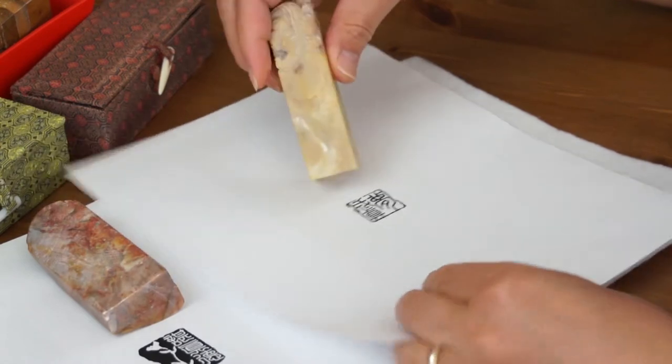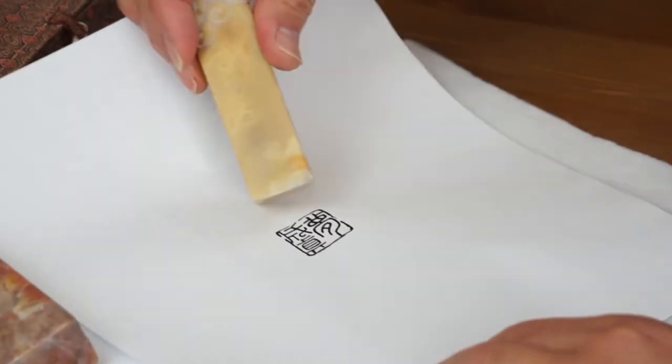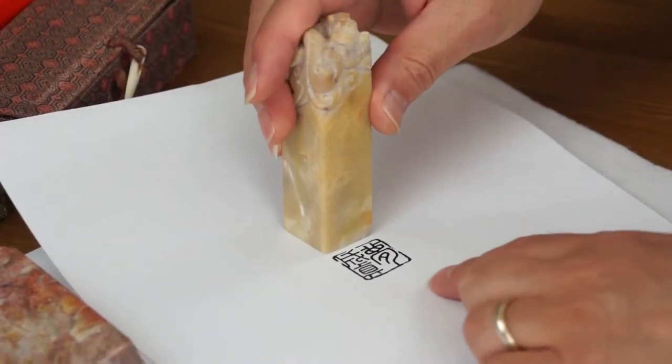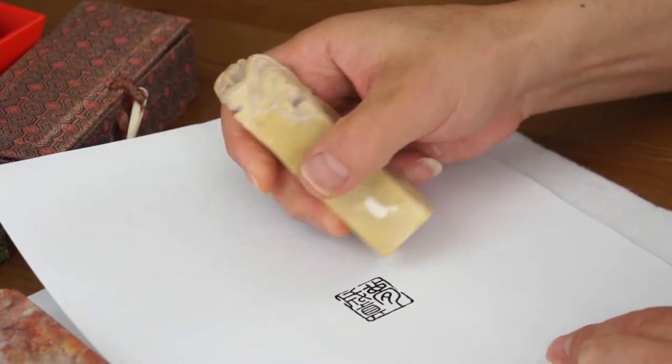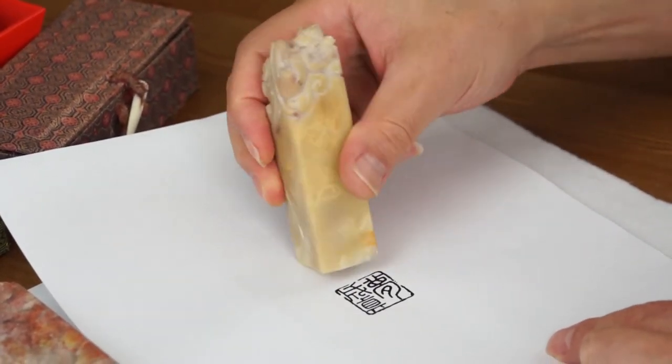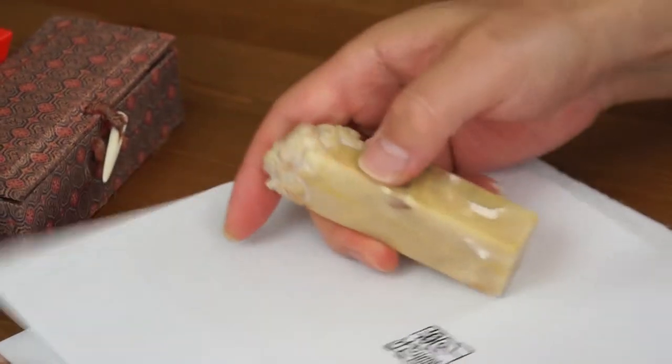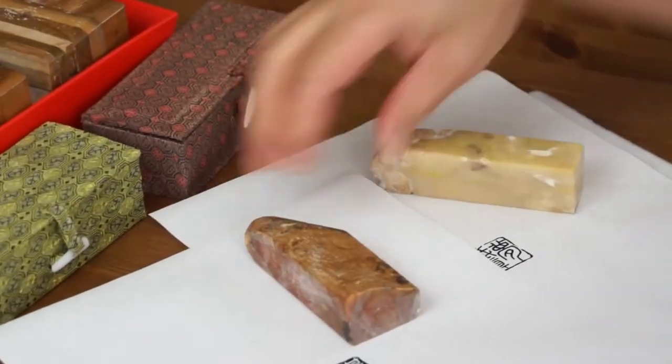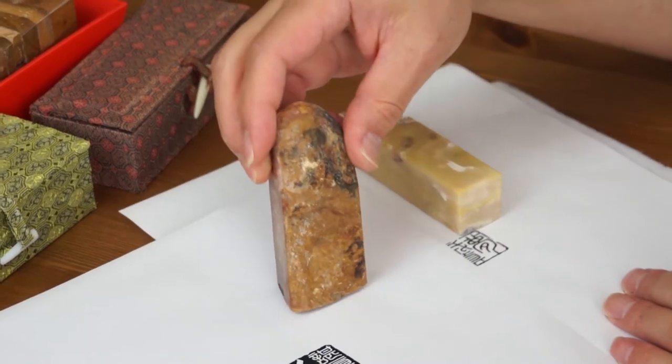This one is a special seal for Andy's wife. It says dream come true. It's a very nice stone, a burning stone with a dragon top. This is a very special stone also called Tianhuang. It's a very rare stone.